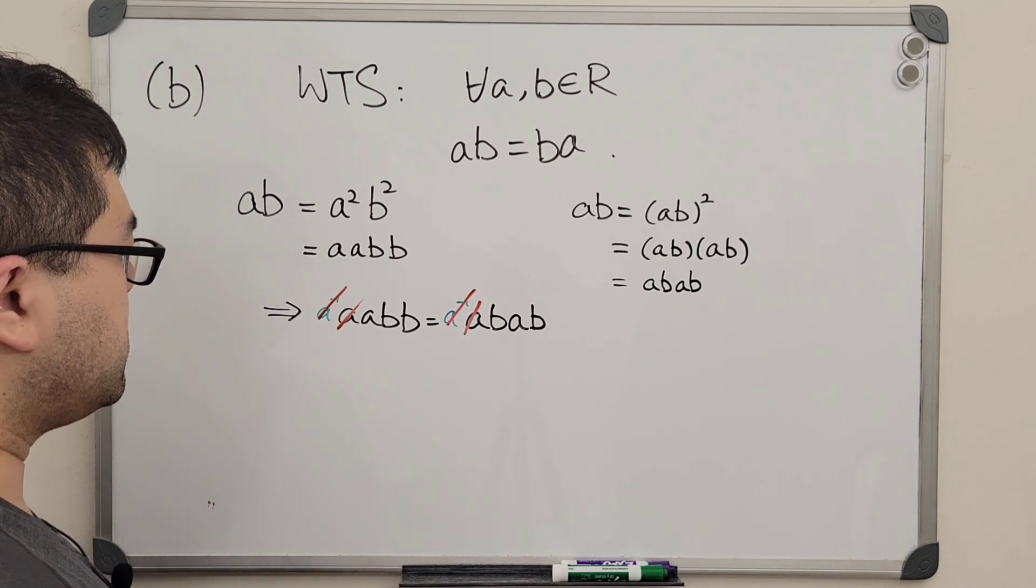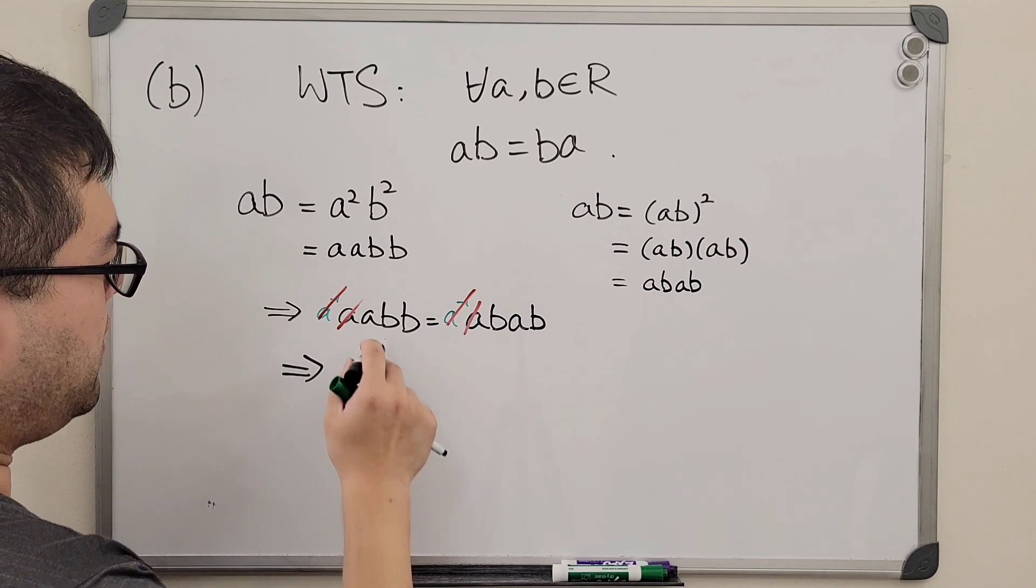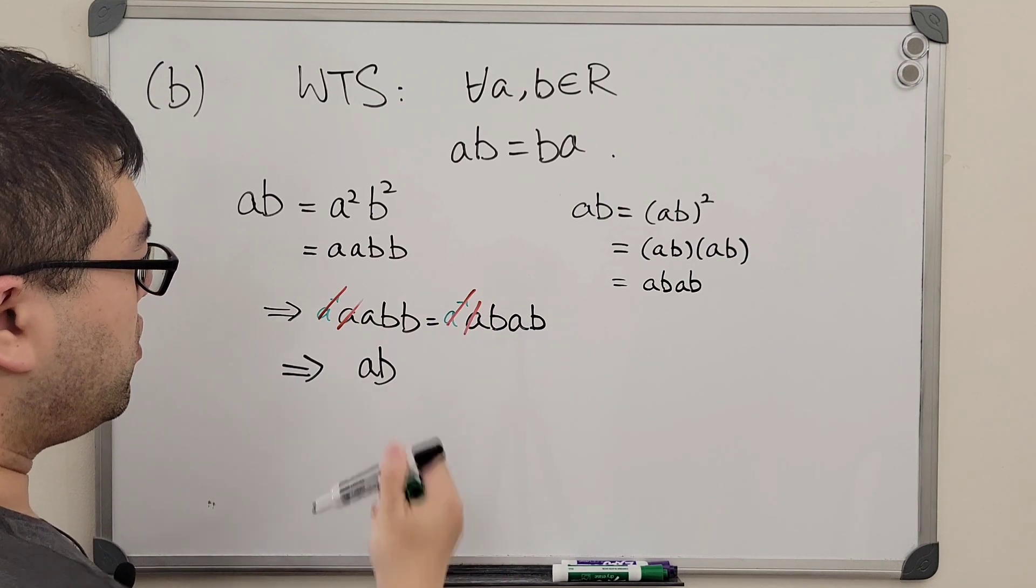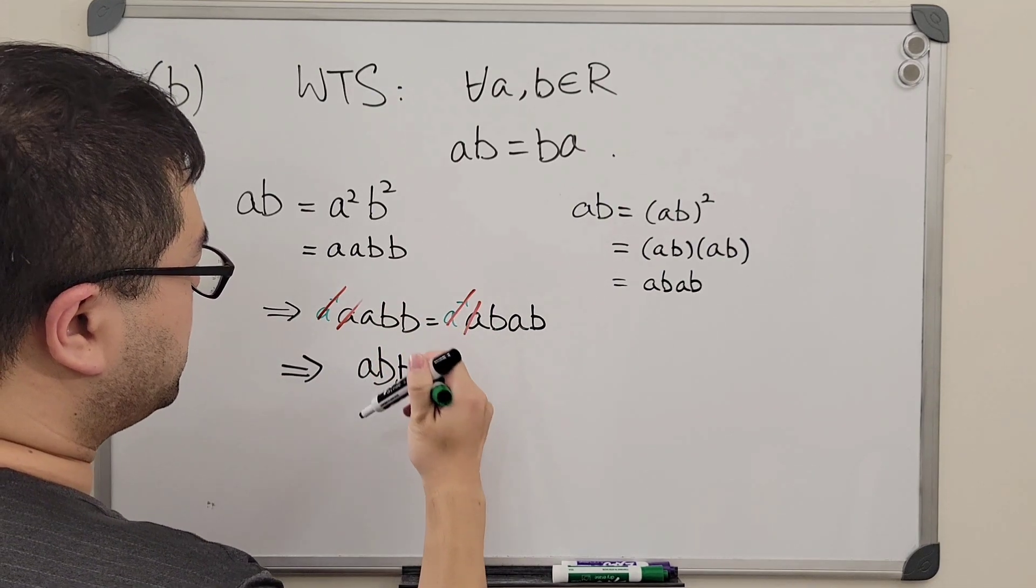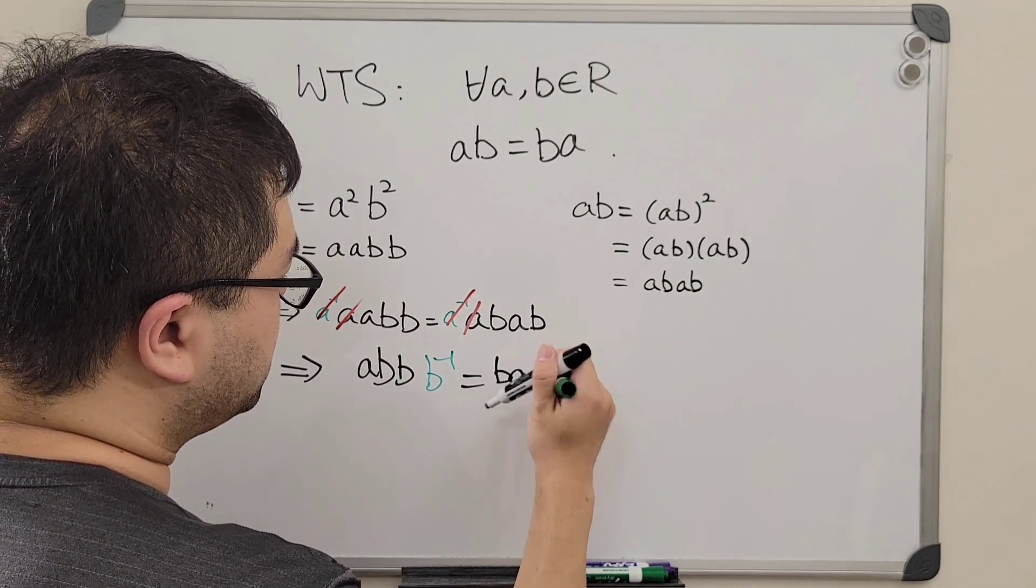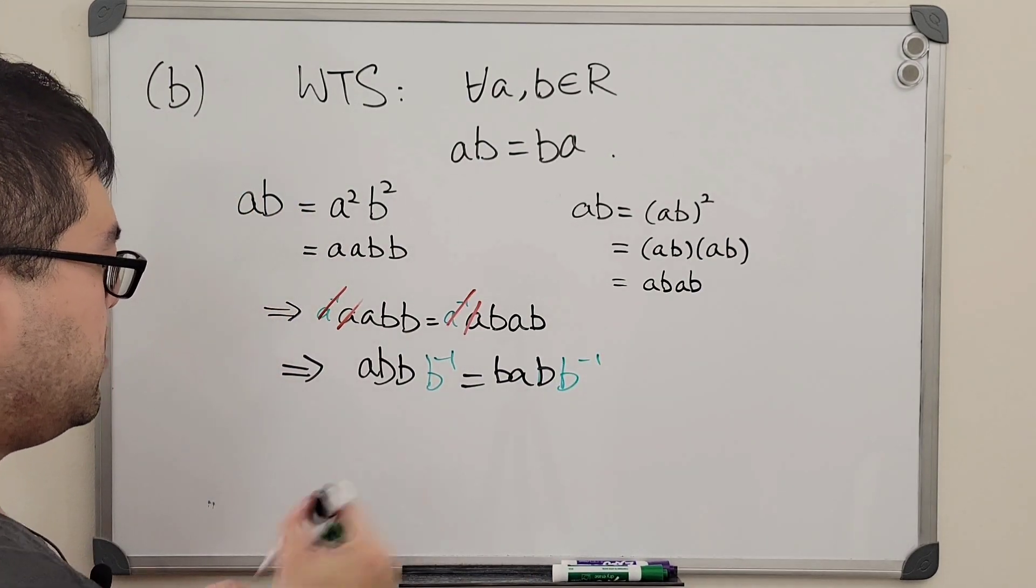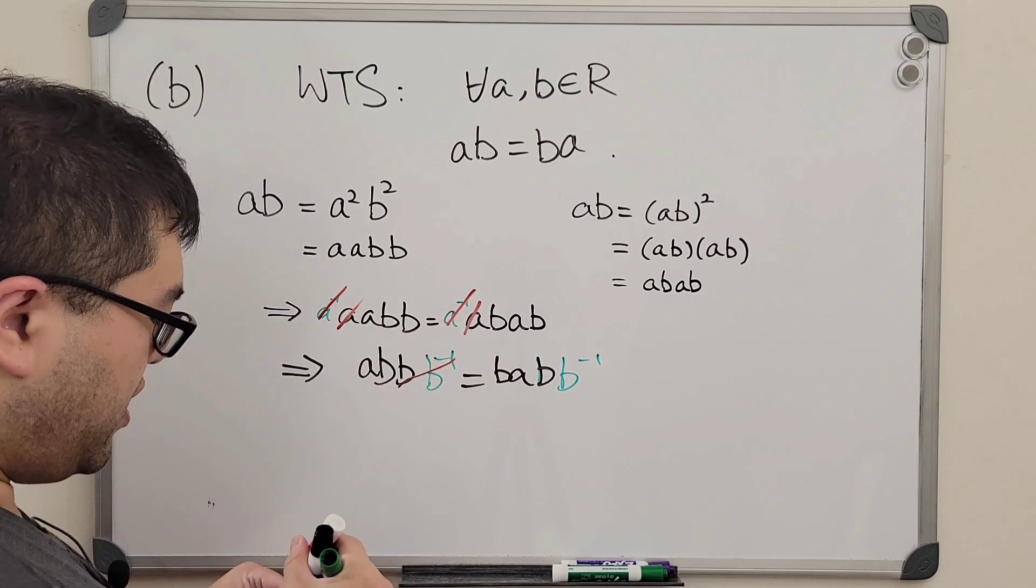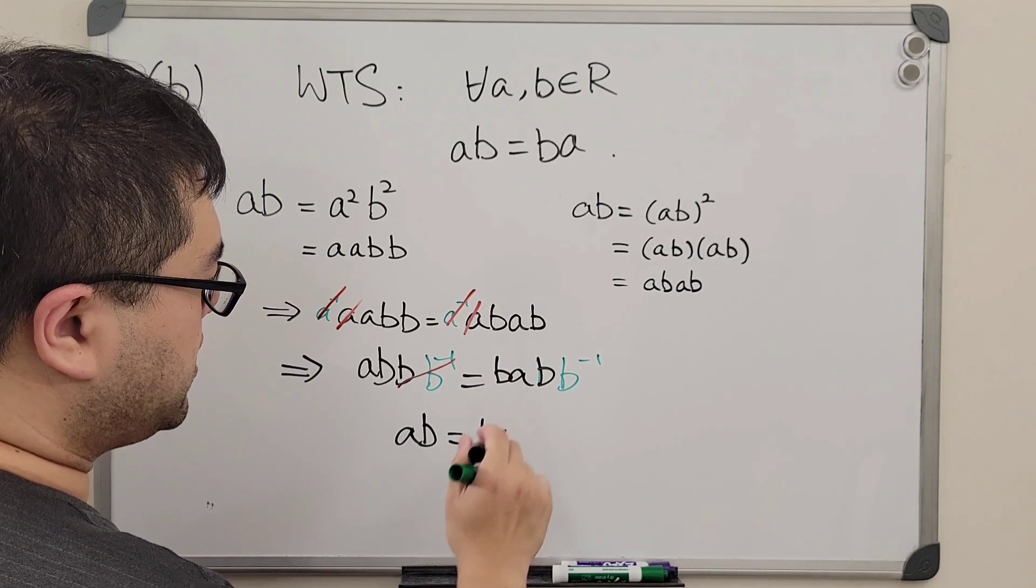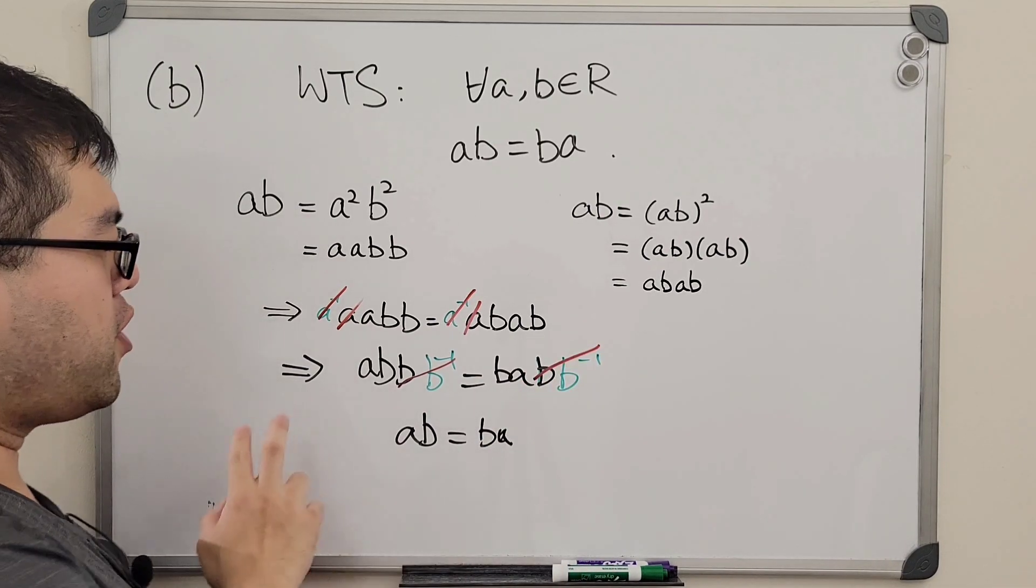And then next we will see that we still have the b left over. Then what can we do? Of course we will just multiply with b inverse as well so that we'll be able to cancel out the b, so that we only have ab on the left and we have only ba on the right, and that finishes our proof for part b.